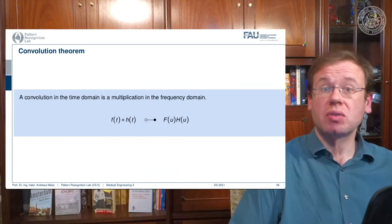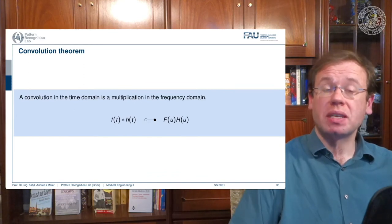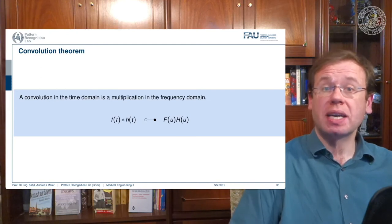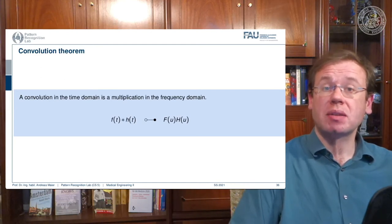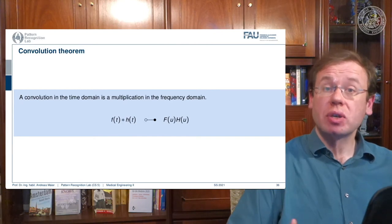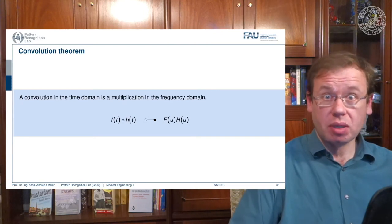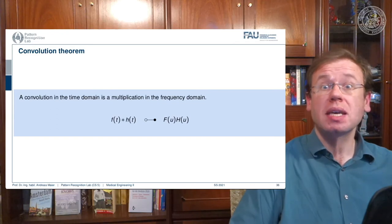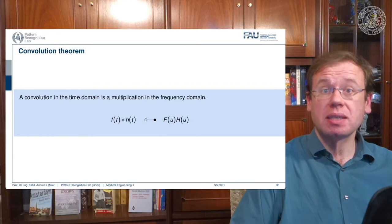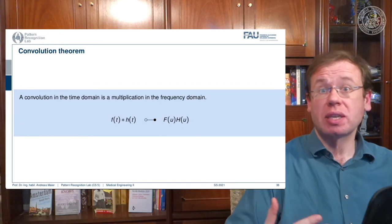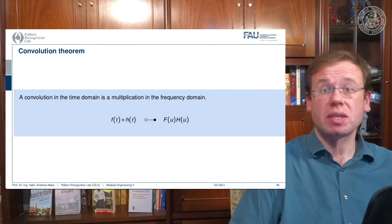At some instances it really makes sense to work in Fourier domain: you do the fast Fourier transform, work in Fourier space, multiply the two signals, and then transform back, and you have exactly implemented convolution. So the Fourier transform is very important in terms of theory to understand systems and their properties, but it's also very important for implementation and saving compute time.